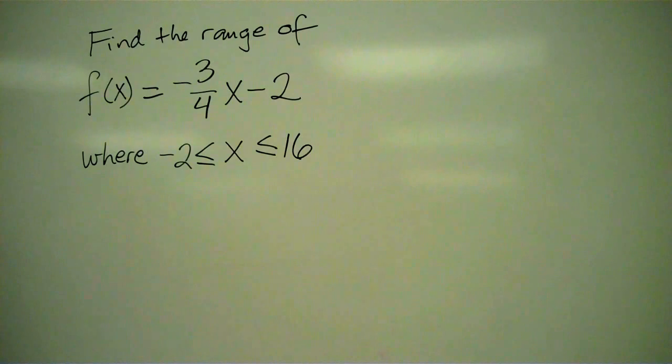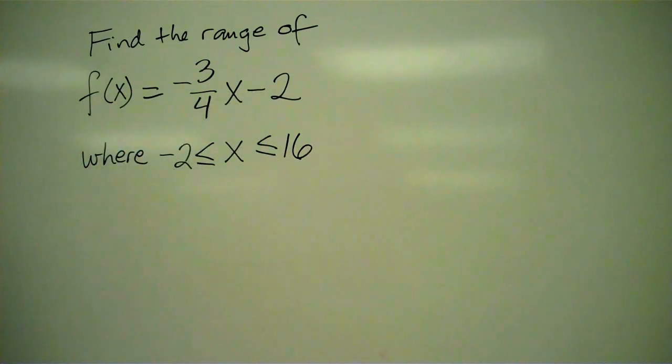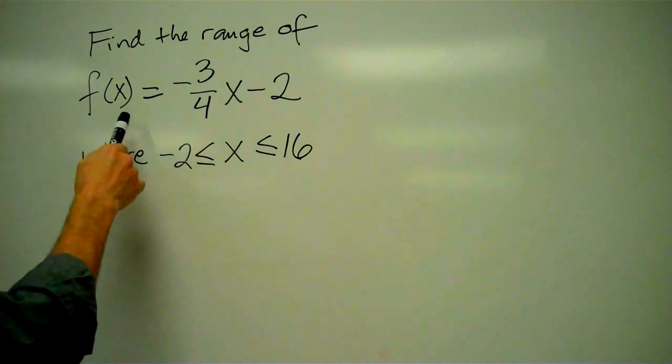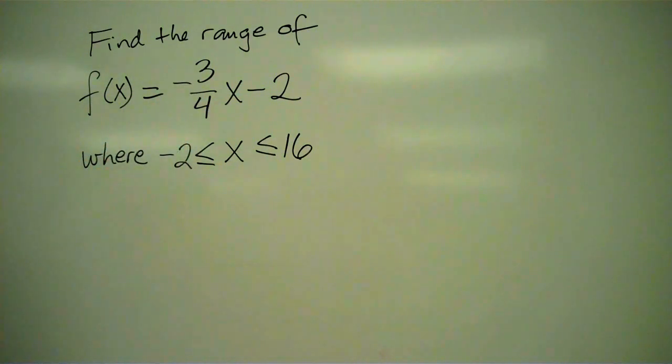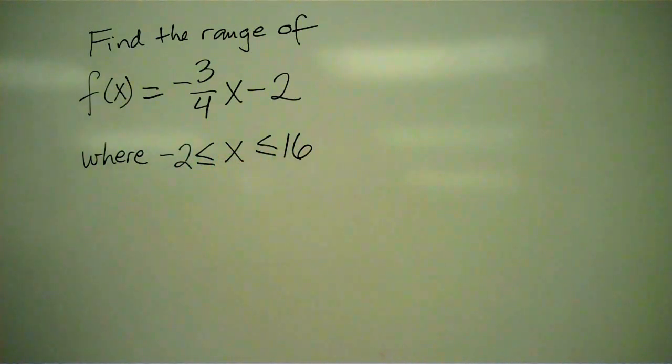In this video, we're going to find the range of a function that has a restricted domain. And in particular, we're going to find the range of the function f of x equals negative 3 fourths x minus 2, where x is limited to the domain from negative 2 to 16.